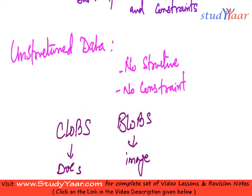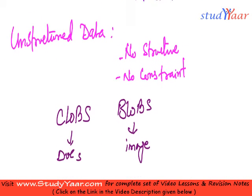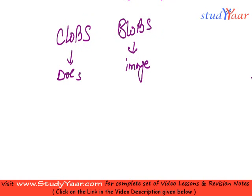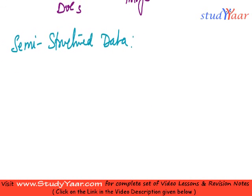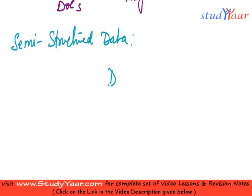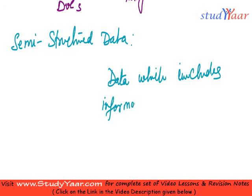And finally, we are going to look at semi-structured data, which is the data on which XML is based. A semi-structured data is data which includes information about the schema in itself.